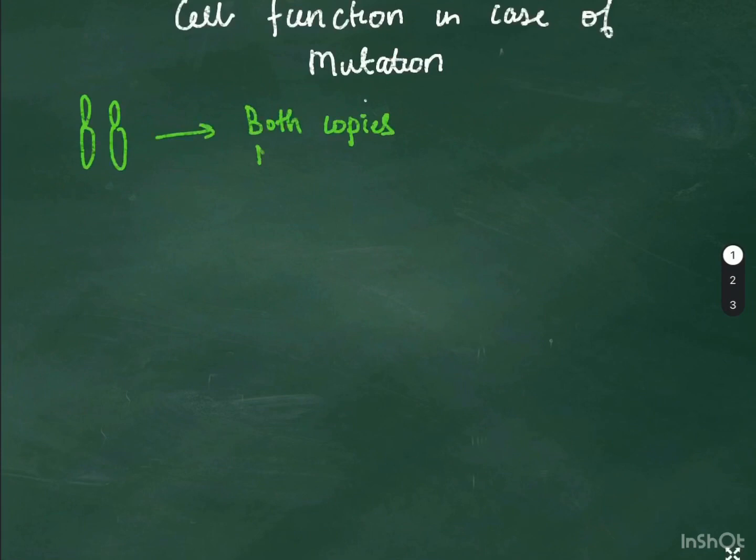When both copies are normal, the cell function is also normal. When one of the copies is affected, as you can see here, the cell function is still normal because of the one normal copy of the gene.